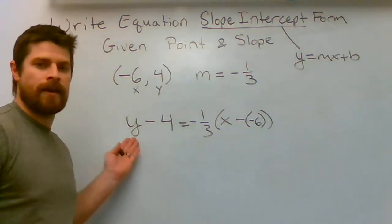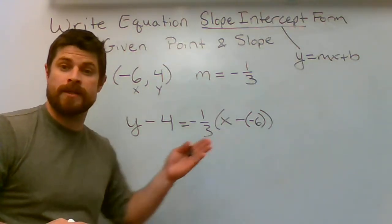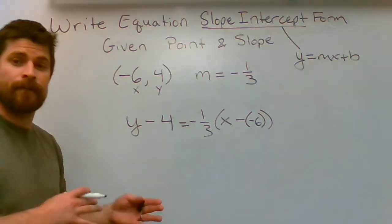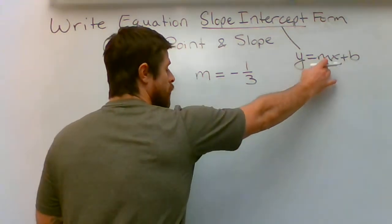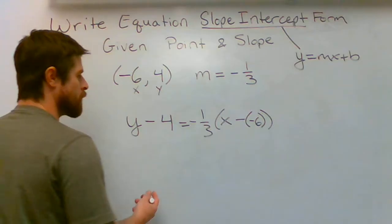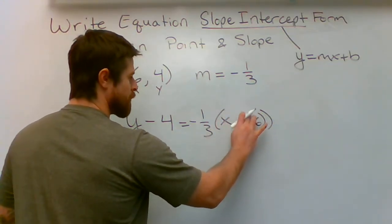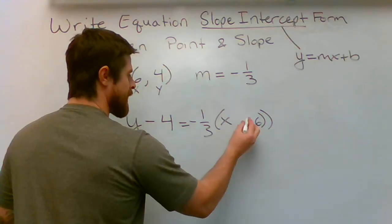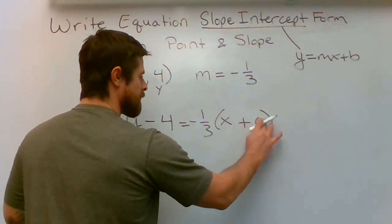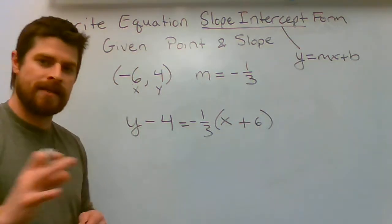That is not what we're looking at right here. We're looking at an equation in point-slope form, but it can easily be converted into slope-intercept form with just a few simple steps. First off, let's change double negatives into a plus sign. So let's say X plus six. Okay, we're just cleaning some things up right now.